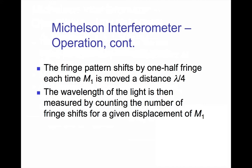Every time the mirror moves by a quarter of a wavelength, the return trip increases by a half wavelength, and so the interference pattern shifts by one half fringe. If the mirror is moved by half a wavelength, the return trip is now longer by a full wavelength, and so the fringes will have shifted by a full wave.